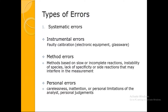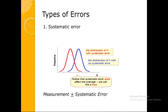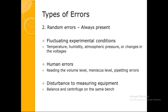Looking at the graph: the blue curve is the ideal scenario with no error. Because of systematic error, the blue curve shifts to the left or right — meaning the average, the tip of the blue curve, shifts to plus or minus side. This is called bias. Systematic error changes the average to a plus or minus side.